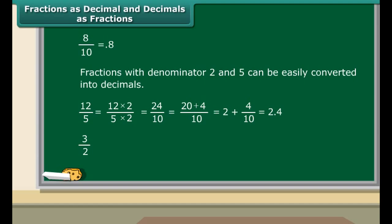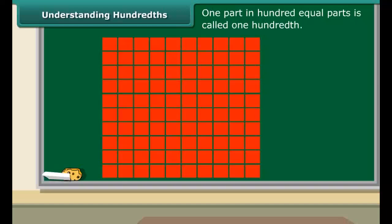Consider another example: convert 3/2 into a decimal. The denominator of the fraction is 2. To know the number of tens involved, multiply and divide the fraction by 5. Thus the new fraction is 15/10, so we have one and five tenths, which make it 1.5. Another way to convert such fractions is to simply divide the numerator by the denominator.